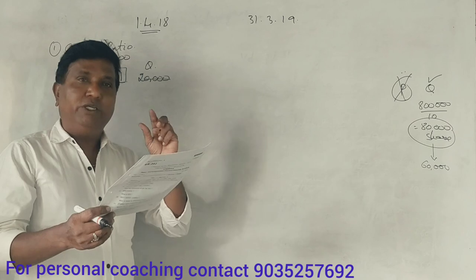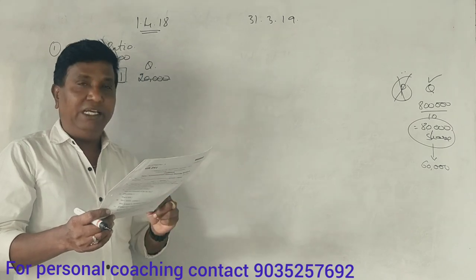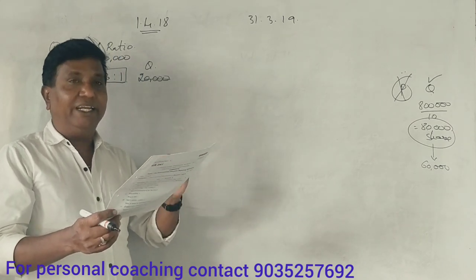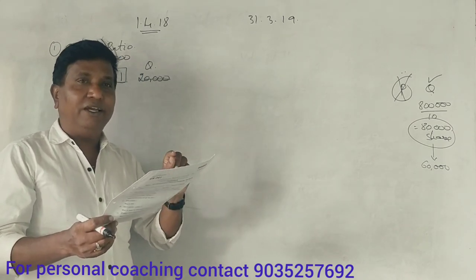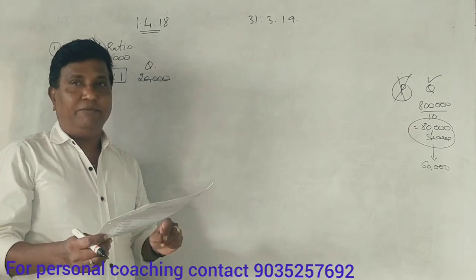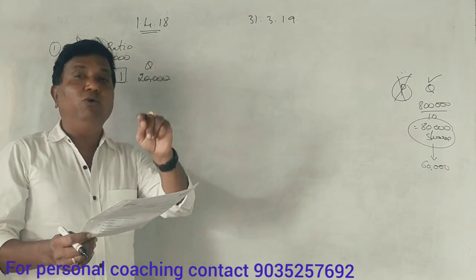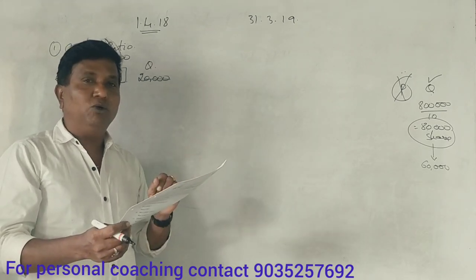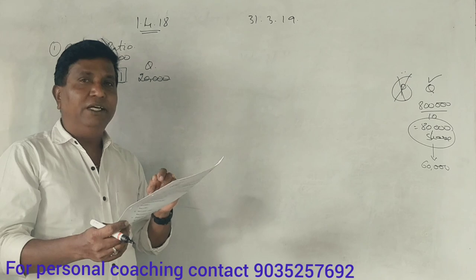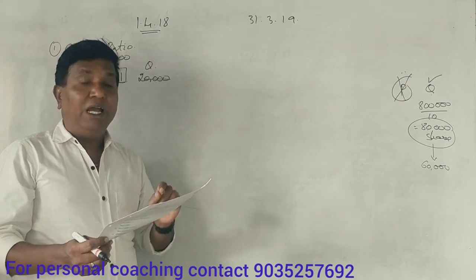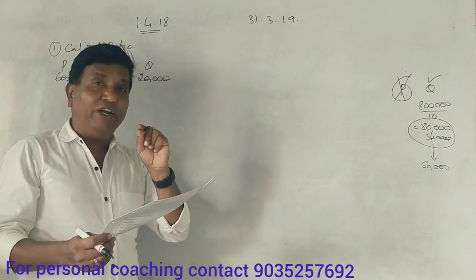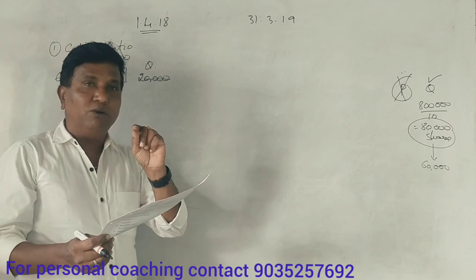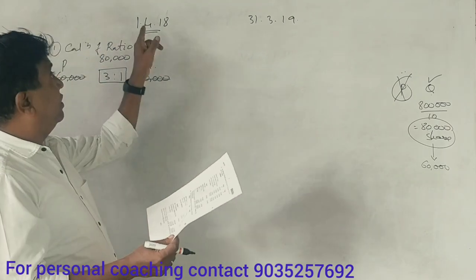Profit and loss account of Q Limited for 2018: 1,20,000. Q company balance sheet profit and loss account total is 3,20,000. Already 1,480.